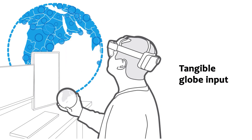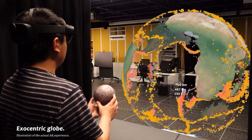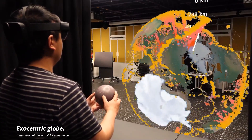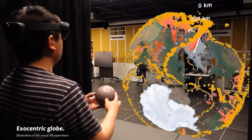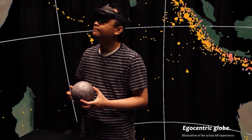The second category is tangible globe input. In this category, the tangible globe mainly serves as a tangible input controller while the virtual data visualizations are located in a separated information space. We present three use cases of tangible globe input. The first one is large virtual globe. Controlling a large and distant virtual object can be a challenge in AR environments. Here, we synchronize the rotations of the tangible globe with the rotations of a large virtual globe showing earthquake data. We created two modes: the exocentric globe, where the virtual globe is seen from the outside, and the egocentric globe, where the user is enclosed completely by the virtual globe.